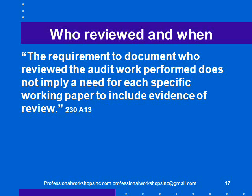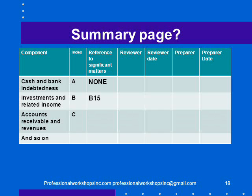Standards say the requirement to document who reviewed the work performed does not imply a need for each specific working paper to include evidence of review. A summary page might list cash and bank, investments, and all the different components audited in an index, with a column for reference to significant matters — either none or a reference to a working paper — so the reviewer and partner have a single page to look at to find any issues in the audit. This is a very convenient and efficient way of doing things. We can also have boxes for the reviewer to initial and date, and for the preparer to initial and date.